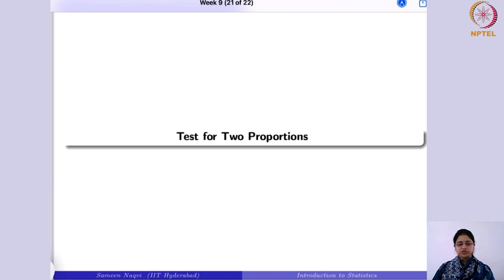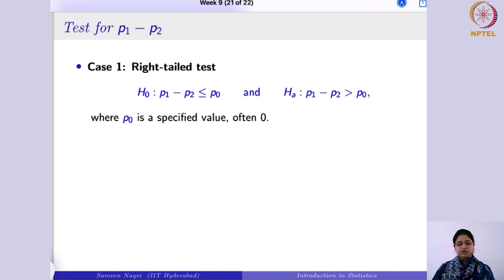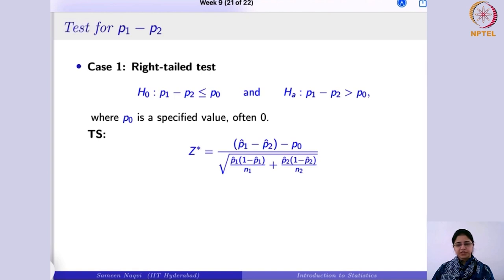Next, we have the test for two proportions. We use the normal approximation to the binomial. In the right-tail test, the alternative is that the difference of the two proportions p1 minus p2 is greater than the hypothesized value p0. The test statistic is (p̂1 − p̂2 − p0) divided by the standard error, where p0 is p1 minus p2 under the null hypothesis. This result also appears in Theorem 8 of Week 5.